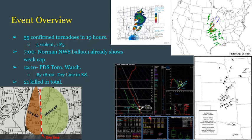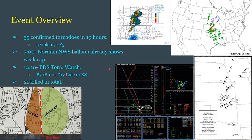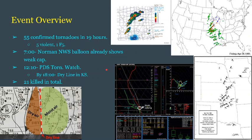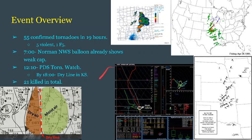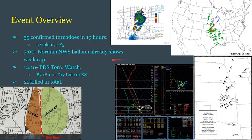If the cap is lower it could be weaker, but you never really know until you have a sounding like the ones NWS weather balloons provide. By five hours later at 12:10, a PDS tornado watch was issued. PDS means Particularly Dangerous Situation, so definitely more dangerous than a regular tornado watch. By 1800, six o'clock, the dry line from the cold front was already in Kansas, and 21 people in total would be killed by this event.